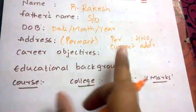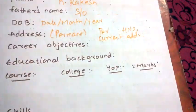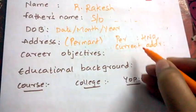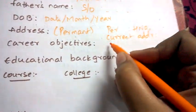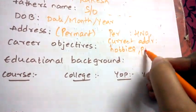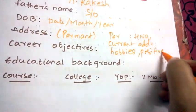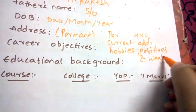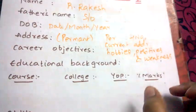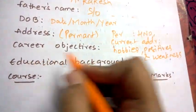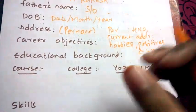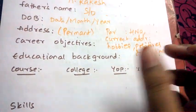If you want to make your resume a little longer, after the address section you can add hobbies, strengths, and weaknesses. Next, mention your career objectives — what you want to achieve or what your goals are.